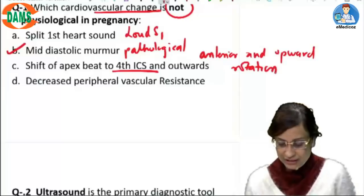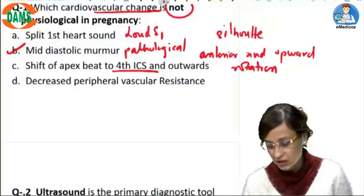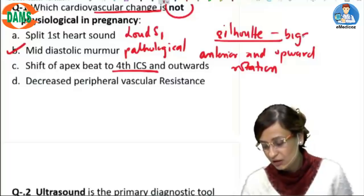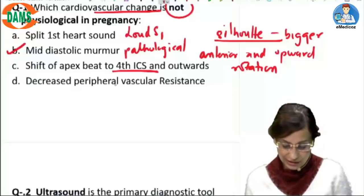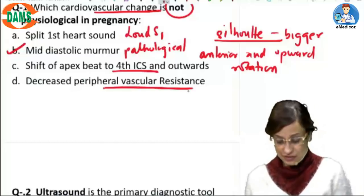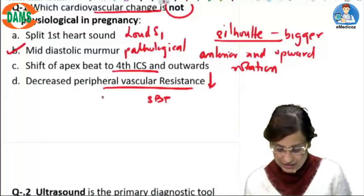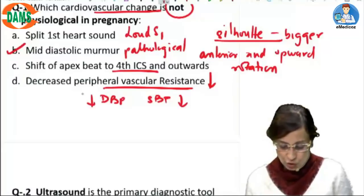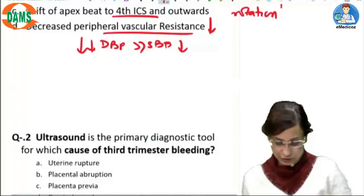Which is physiological and that is why the cardiac image or the cardiac silhouette on x-ray will be bigger, but it is an apparent cardiomegaly not a real cardiomegaly. The peripheral vascular resistance is decreased because both SBP as well as DBP, both of them are going to fall. Although the fall in DBP is more than the fall in SBP.